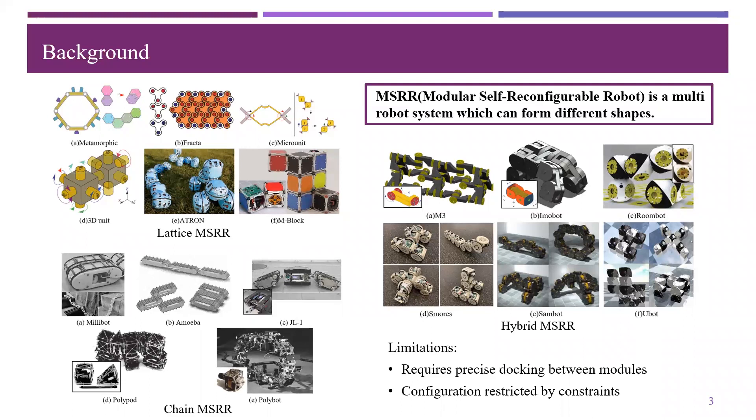On the other hand, the system is transformed into other configurations by changing the connection relationship between modules. The connector of the existing MSRR is located on a surface or a point of the module. The connector is limited and located in a specific location, which limits the system to form more configurations and greatly limits the ability of MSRR to solve uncertain tasks.